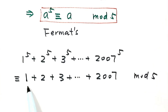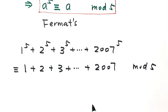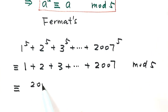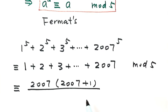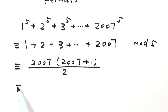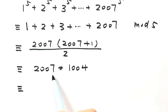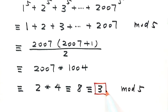So then the sum 1 plus 2 plus 3 up to 2007 just equals 2007 times 2008 divided by 2. Then simplifying, this is 2007 times 1004. Then 2007 divided by 5 has remainder 2, and 1004 has remainder 4 when divided by 5. Then their product gives 8. So then 8 has remainder 3 when divided by 5. So then 3 is the answer for this question. Thanks for watching.